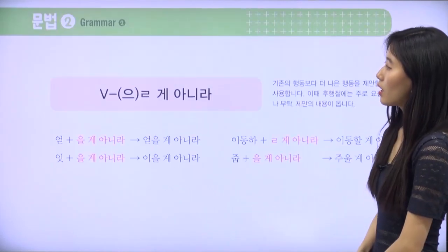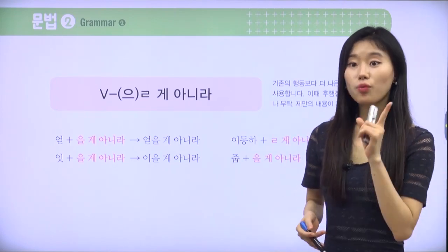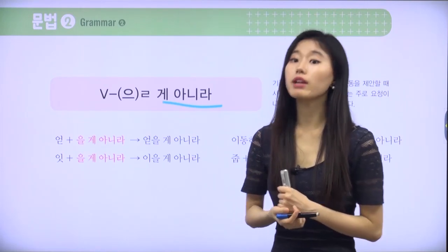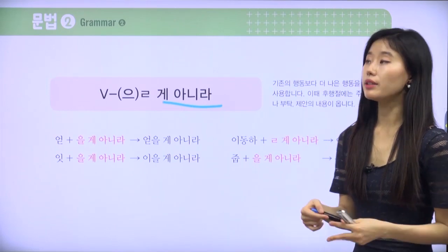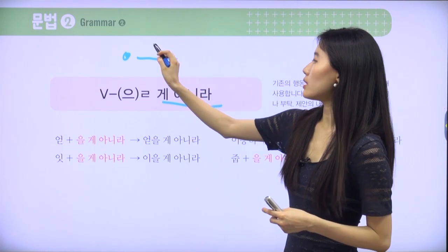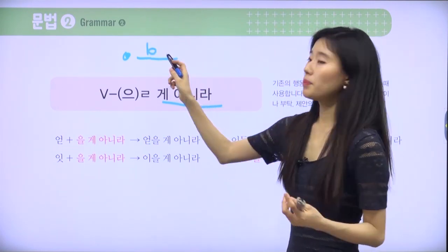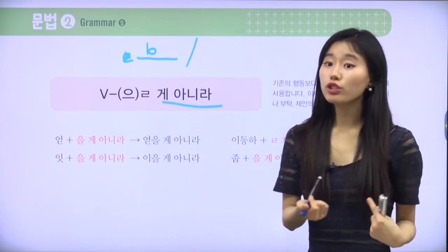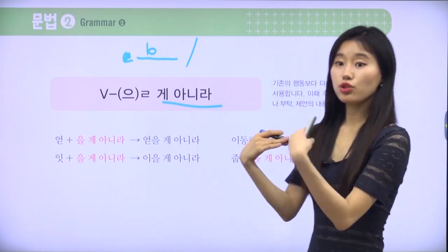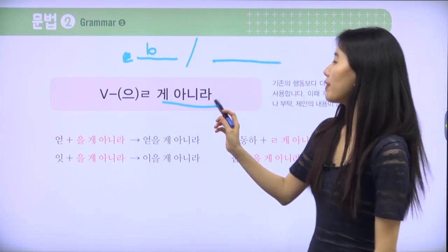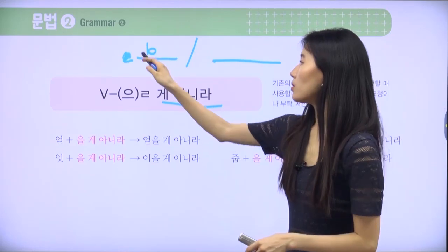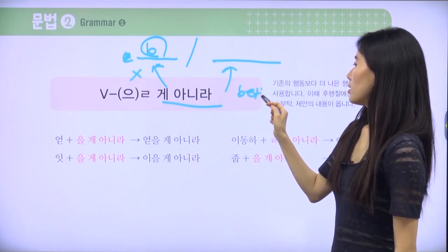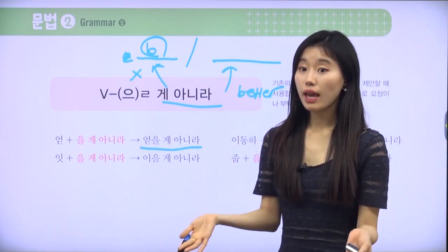Now moving on to the next grammar point: 을 게 아니라. First, we should think about 으 and 리을 irregulars. The concept is: there is a person doing a behavior, but that behavior is not the best one. I want to give a better suggestion — not this, but this. 이거를 할 게 아니라 — this action is not good, so let's suggest something better. For example: 얻을 게 아니라 — 얻다 means to get — so instead of getting that, try something else.